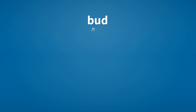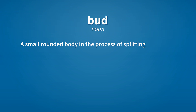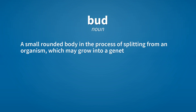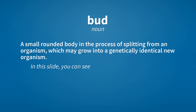Bud. Noun: a small rounded body in the process of splitting from an organism, which may grow into a genetically identical new organism. In this slide, you can see a yeast cell forming buds.